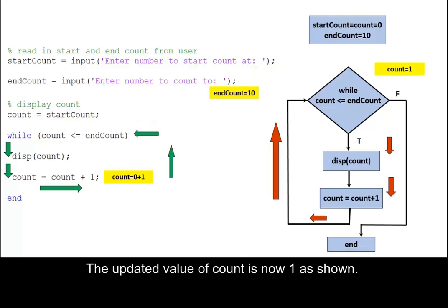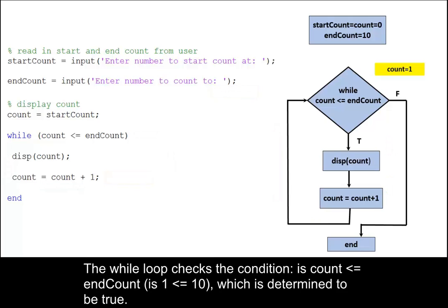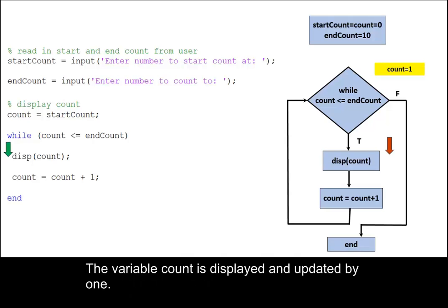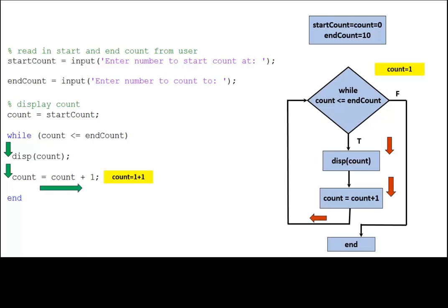The updated value of count is now one, as shown. The while loop checks the condition: is count less than or equal to endCount? Which is determined to be true. The variable count is displayed and updated by one. The loop returns to the beginning.